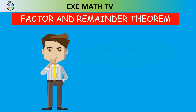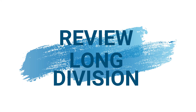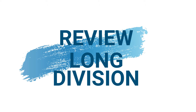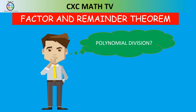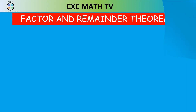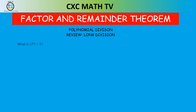Let's just backtrack a little bit. In order to go through polynomial division, we always like to review long division. So let's say we're asked to divide 177 by 5. We'd start by saying 5 into 1 goes 0 times. 5 times 0 is 0. 1 minus 0 is 1. Then we bring down the 7. 5 into 17 goes 3 times. 5 times 3 is 15. We subtract.